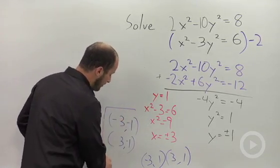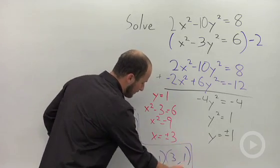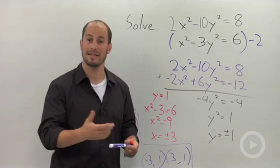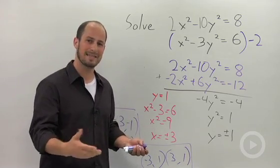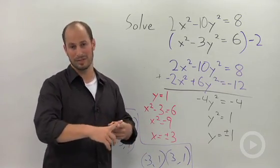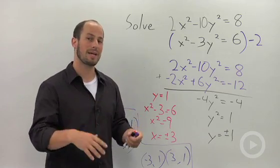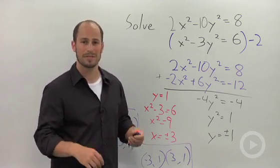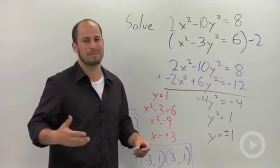So we end up with four points altogether. So solving a system of nonlinear equations by elimination, pretty much exactly the same except instead of dealing with just one solution for our lines what we're going to end up with is multiple solutions: up to 4 sometimes, 0 sometimes, 1 sometimes, 2 sometimes, 3. It all varies.